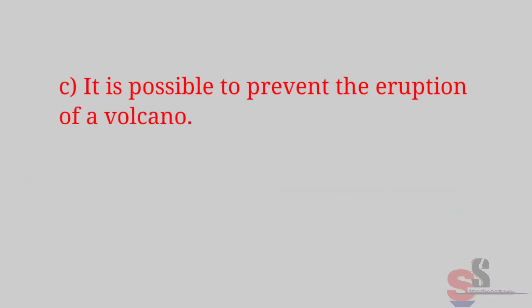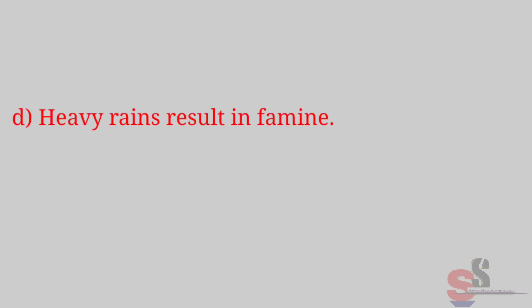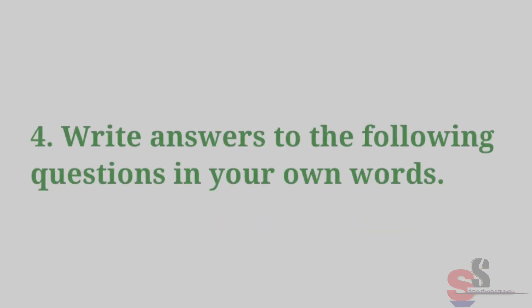C. It is possible to prevent the eruption of a volcano. False. Volcanic eruption is a natural disaster which may happen anytime; there is no technology that can stop such a calamity. D. Heavy rains result in famine. True. Heavy rains may wash away the crops and cause damage to the farmlands; this is called a wet famine.